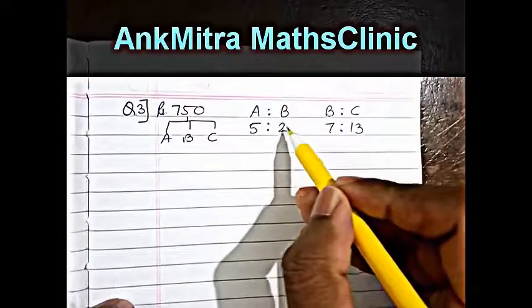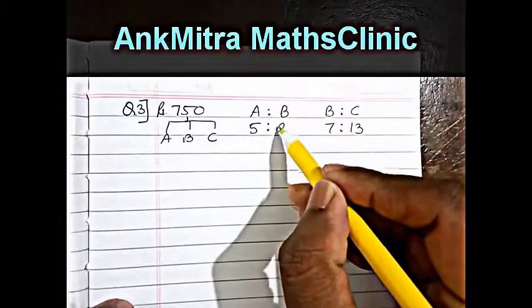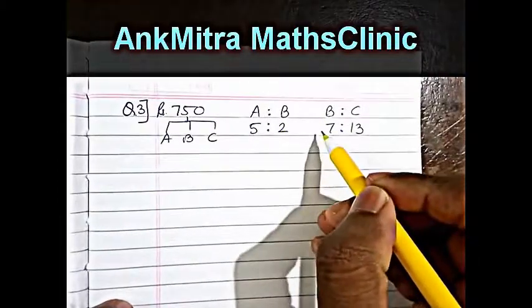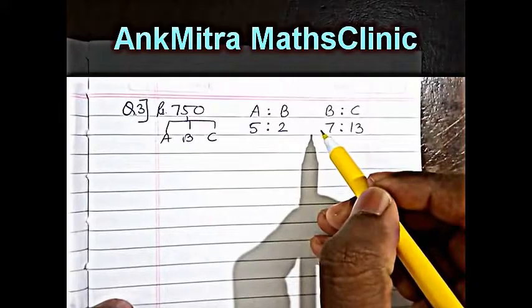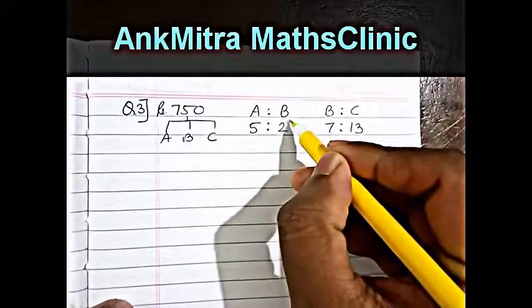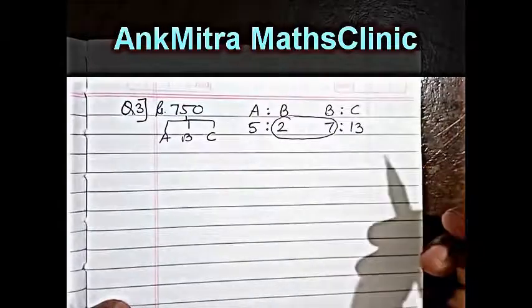To bring that, what we will do is the corresponding values of B in the two different ratios we will have to bring them to an equal number. So these two numbers have to be brought to a single number.